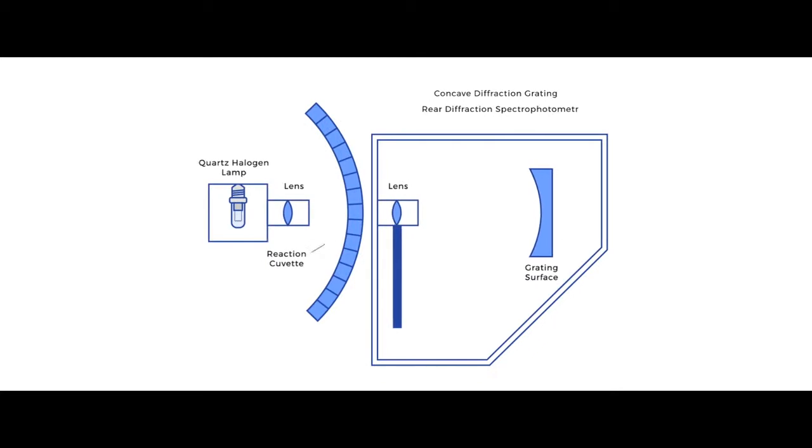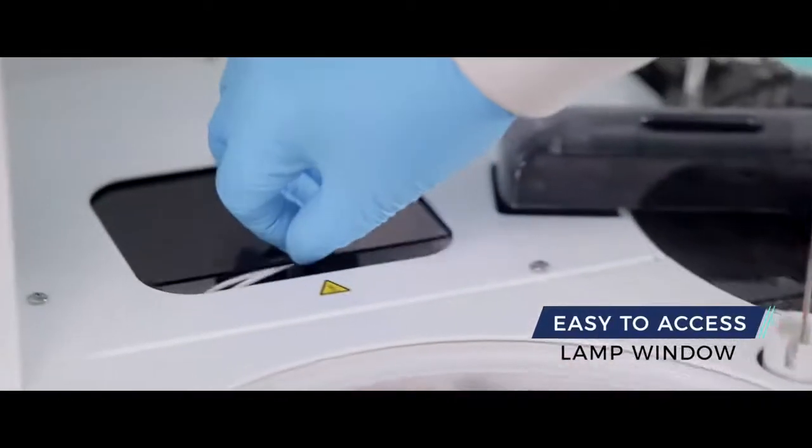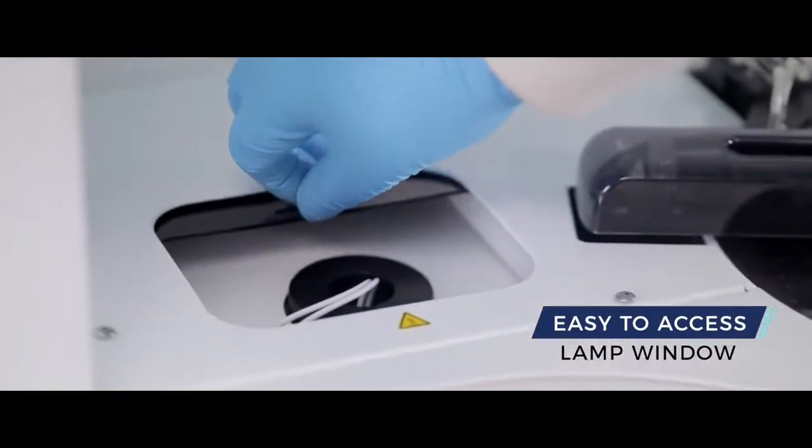The optical system has fiber optic cables that transmit light from the lamp to the cuvette and utilizes grading photometry. 13 wavelengths from 340 nanometers to 800 nanometers are available to accommodate most clinical chemistry testing requirements. An easy to access lamp window is provided for easy maintenance of the system.